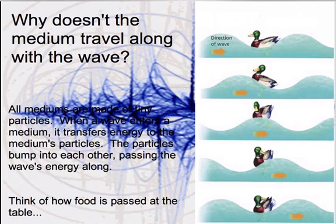Why doesn't the medium move with the wave? Well, all mediums are made of particles, little itty-bitty tiny pieces. When that wave enters the medium, it transfers energy. So you can imagine one particle bumping into the next particle. The particles bump into each other and then pass that energy along. So you think about food being passed around the table, but instead of each person taking their little piece of the food, they just pass it along all the way around the table, like vegetables. I'm kidding. Eat your vegetables, kids.